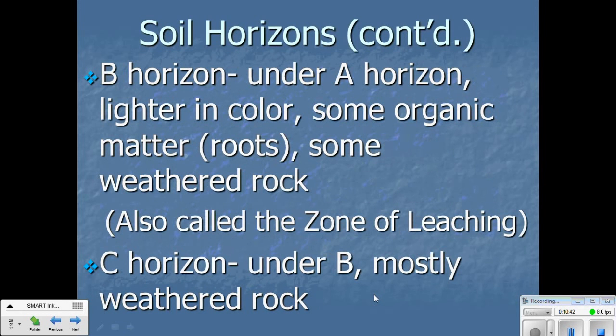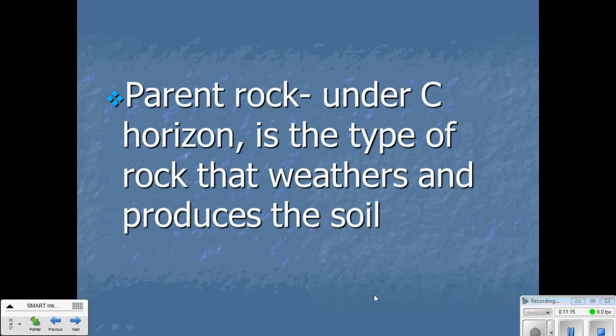The B horizon is under the A horizon. It's lighter in color because it doesn't have as much of that material breaking down. It has some organic matter and some roots and some weathered rock, which is also called the zone of leaching. If you think about something bleeding into another area, that can be called leaching. The C horizon is under the B horizon, and it's mostly weathered rock, so lots of stones and that sort of thing instead of sediments. And then the parent rock is under the C, and that's the type of rock that weathers to produce the soil. So this is just solid rock. It's like the bedrock.